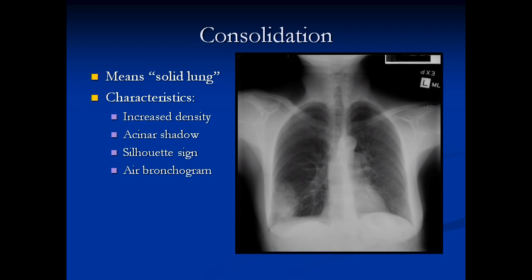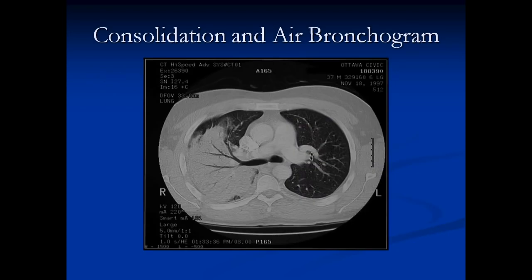Thirdly, you'll see that the diaphragm immediately adjacent to the area of consolidation is completely gone — we can't see it. We can see the diaphragm central to the consolidation and into the costophrenic angle beyond, but right where the solid lung is, we cannot see the diaphragm. This is called the silhouette sign. One of the other changes we look for in consolidation with airspace disease is an air bronchogram. Here I've shown a lobar pneumonia — you can see the bronchus branching out into the pneumonia. Those black branching lines are called an air bronchogram, and that is another characteristic of airspace consolidation.